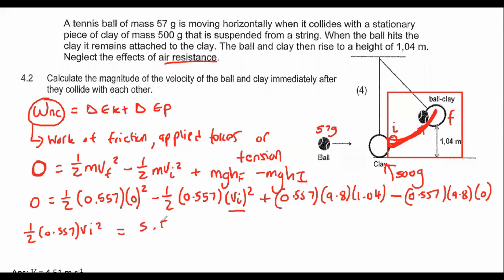I'm not going to round off just yet. That's going to give me 5.67694. Then the rest is easy, and that gives us a velocity of 4.51 meters per second. And so that is the velocity that the ball and the clay move at exactly after they have collided with each other, 4.51 meters per second.